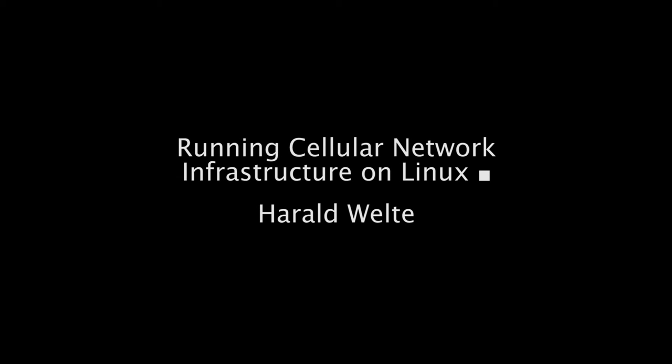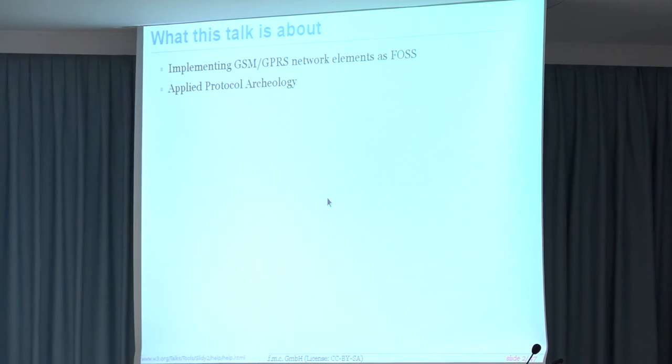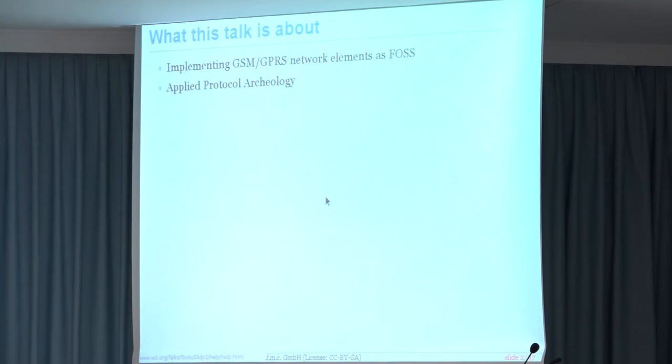Welcome everyone to this tutorial on how to run a free and open-source software-based cellular network on top of Linux. This is about implementing GSM and GPRS network elements as free and open-source software, which I've been doing for the past few years. I sometimes call it applied protocol archaeology, because we're talking about things that were designed in the late 1980s and to some extent in the 1990s — really, really old stuff.